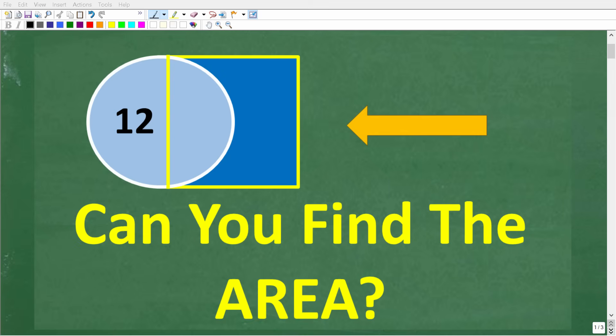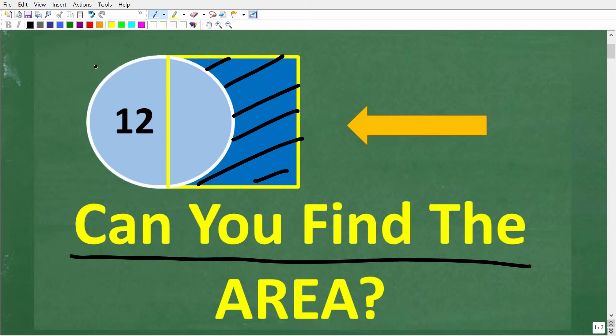So if you think you're pretty good in geometry, this should be a very easy question to answer. And what we're looking for is the area of this region right here. And what we have is a square that overlaps a circle.